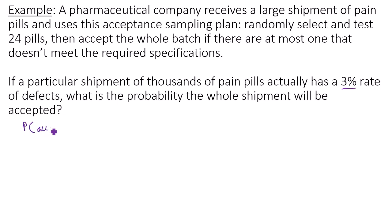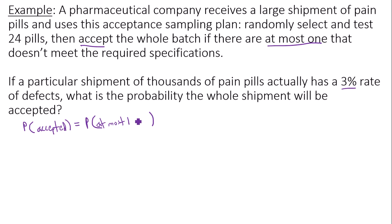So you're doing the probability that the whole shipment is accepted. Let's think about what it means for a shipment to be accepted — it's accepted if there are at most one pill that is defective, meaning it doesn't meet the required specifications. So the probability of a success, in this case a pill being defective — that's the behavior we're looking at — is P equals .03.